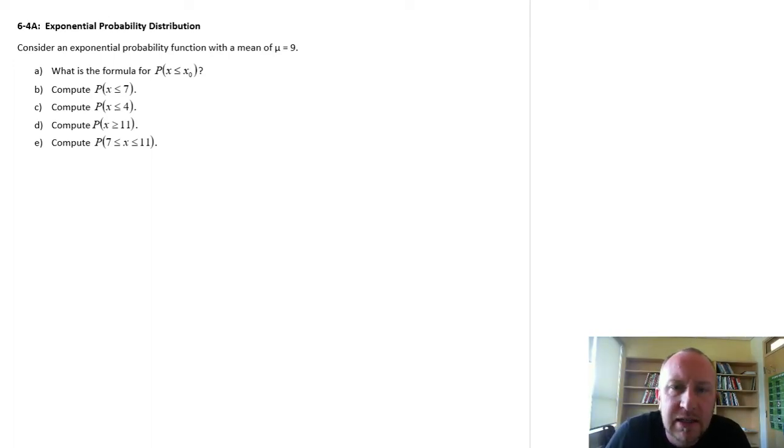Hello, welcome back. In this exercise we're going to look at the exponential probability distribution. This one is very similar to the Poisson distribution. The Poisson, you remember, was a discrete distribution where we looked at how many events occurred over a specified interval, time or space or something like that.